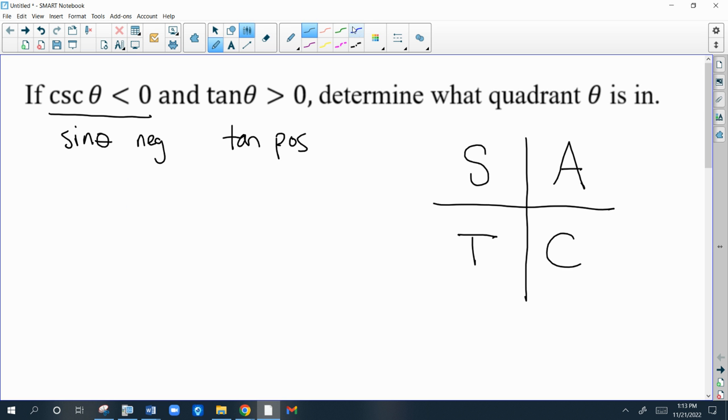So the first one says sine is negative, so you have to eliminate the quadrants where sine is positive. So you have two choices now: quadrant three or four. Here it says tangent is positive, so clearly tangent is positive here, not here. So we are in quadrant three.